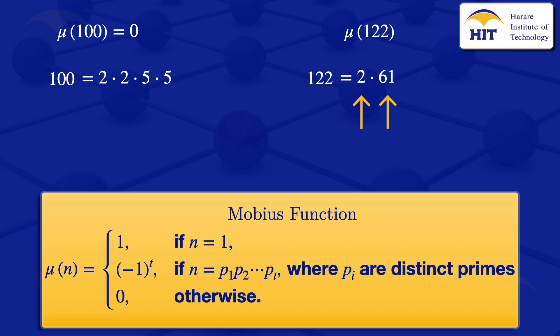So what we'll be having is we are just having two distinct primes. So our t is 2, so I'll put t equals 2 here, so we'll be having minus 1 squared. And minus 1 squared would give us 1, so we'll have that μ(122) is equal to 1.